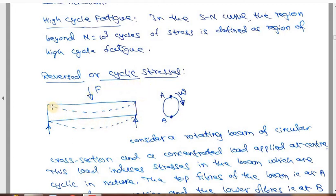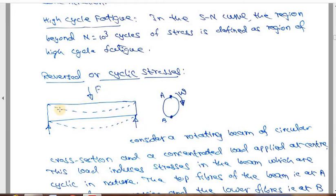Consider a beam with a circular cross section — essentially a rotating shaft — subjected to simply supported conditions, with a point load at the centre. As a result, it bends as shown by the dotted line. When it bends, the top fibre at this particular point is subjected to compressive stress.